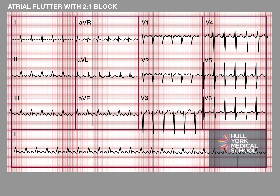Because the atria are running at 300 beats per minute in a two-to-one block, you will see a very classic heart rate of bang on 150 beats per minute. This is generally unvaried — simply by looking at someone's observation chart and seeing that every single time their pulse is taken they are at 150 beats per minute, you can start to think this could well be flutter with two-to-one block. A sinus rhythm will not give you that sort of consistent rate — it's going to fluctuate. That steady 150 is either flutter with two-to-one or some other significant arrhythmia, but the chances are it's flutter.